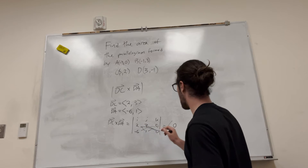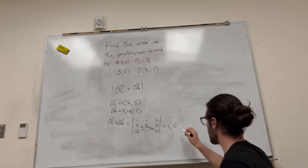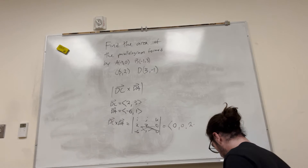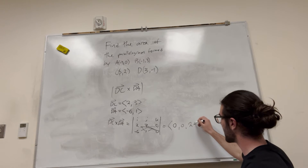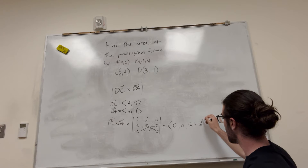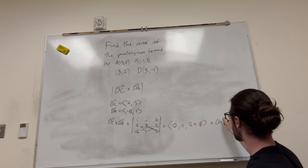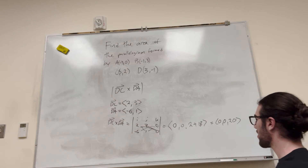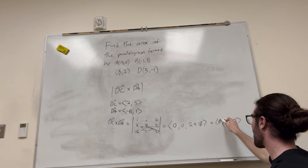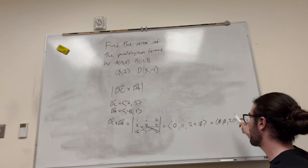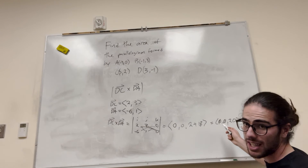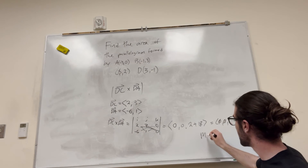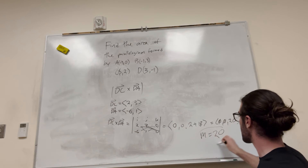The last component is going to give you 2 minus negative 18, which equals 20. So the result is (0, 0, 20). Since it doesn't move at all across X or Y, and it's 20 across Z, the magnitude is just 20. So the area of the parallelogram is 20.